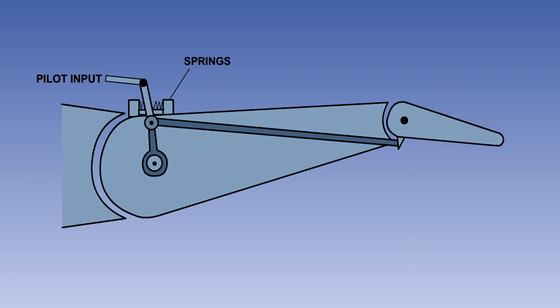As the aerodynamic loads increase, the spring force will be overcome, causing the balance tab to move in the opposite direction to the primary control surface, thus reducing the stick forces.